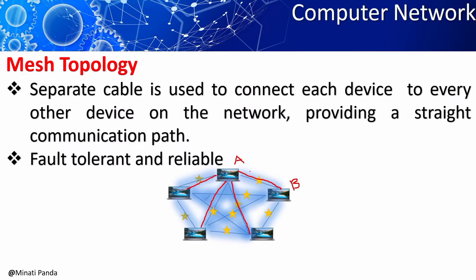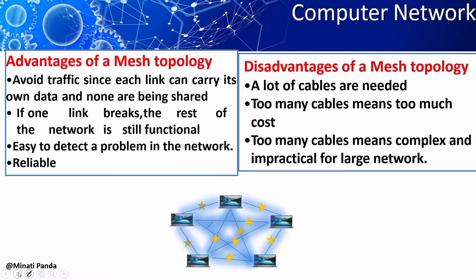If A wants to communicate with B but the nearest communication line between A and B has failed, there are many other ways to go to B. That is why mesh topology provides hundred percent fault tolerance and reliability. A failure is not going to affect the overall network.